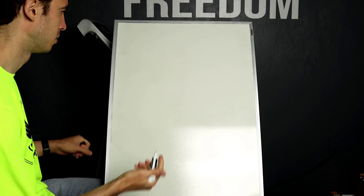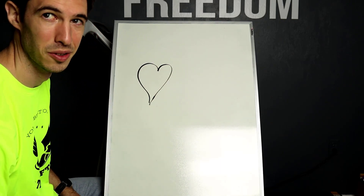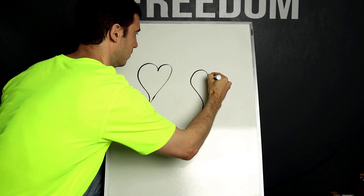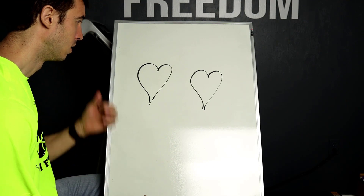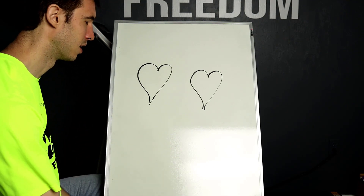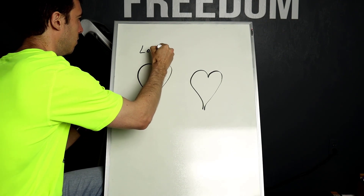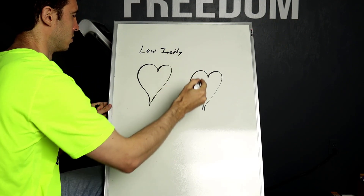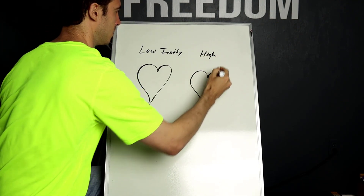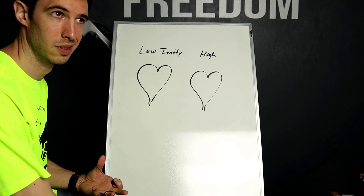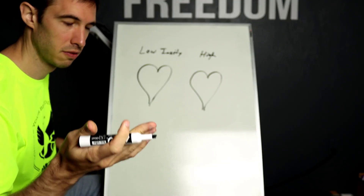I'm going to draw two different hearts up here on the whiteboard — I know this is not anatomically correct, but it'll give us a view of what's going on. When we exercise, the heart muscle itself is actually going to grow. The way that it grows is different depending on what kind of exercise you're doing. Both high and low intensity cause heart muscle growth, but differently. Let's look at high intensity first and think about it in terms of a sprinter versus a distance runner.